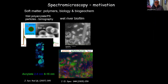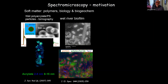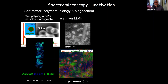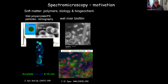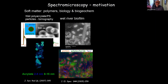A second example, one of the very first measurements with the new generation microscope around 2001, is a sample of a natural biofilm—a wet sample sandwiched between two silicon nitride windows. At the bottom you can see the analysis of three of about eight components that we can identify and map in this particular sample.